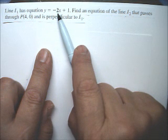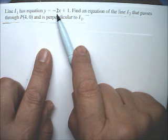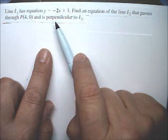See, this slope is negative 2, so the negative reciprocal is going to be positive, and the reciprocal of 2 is one-half.